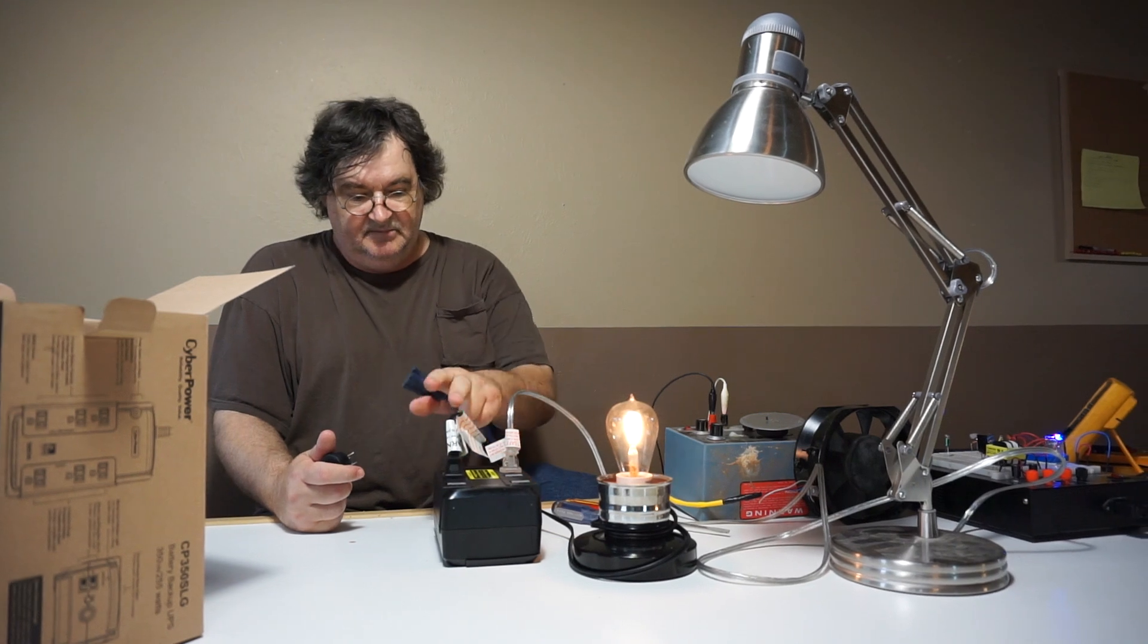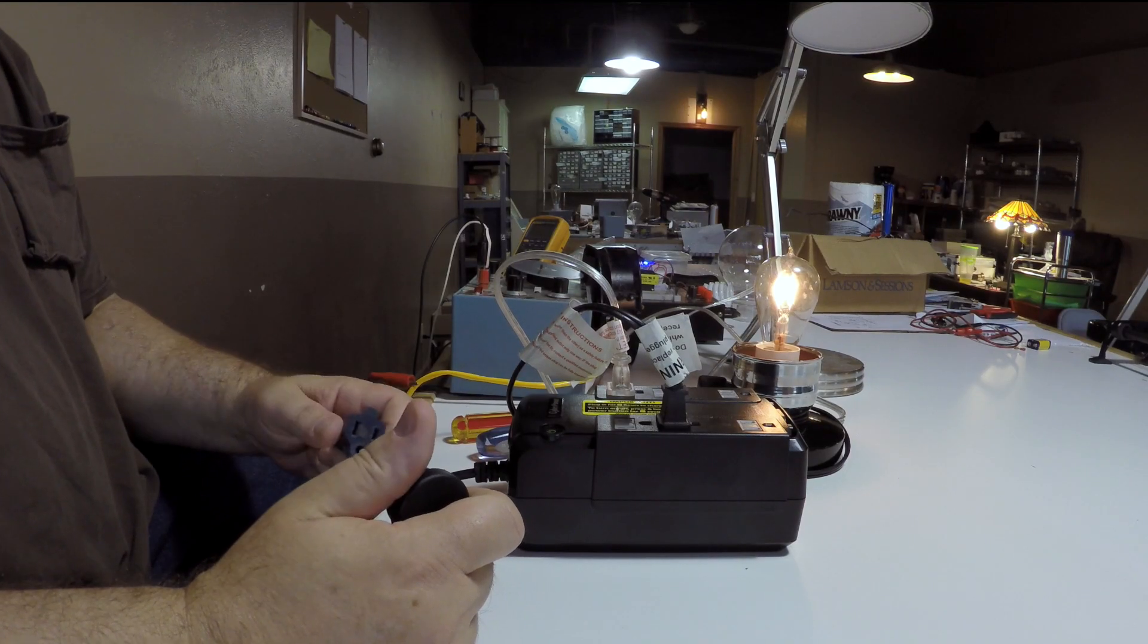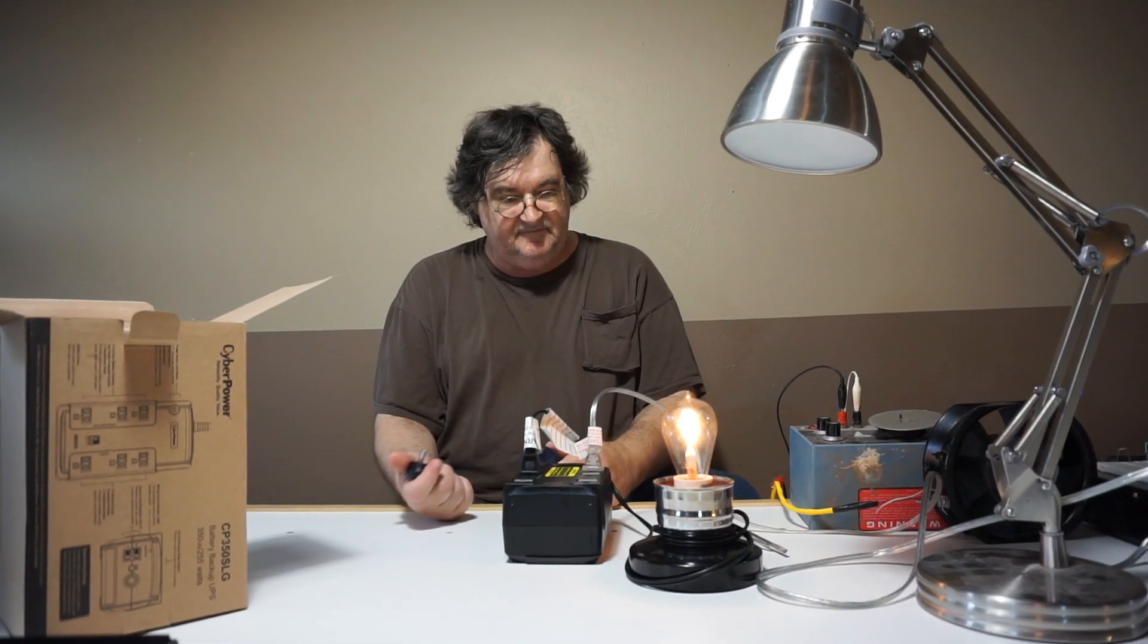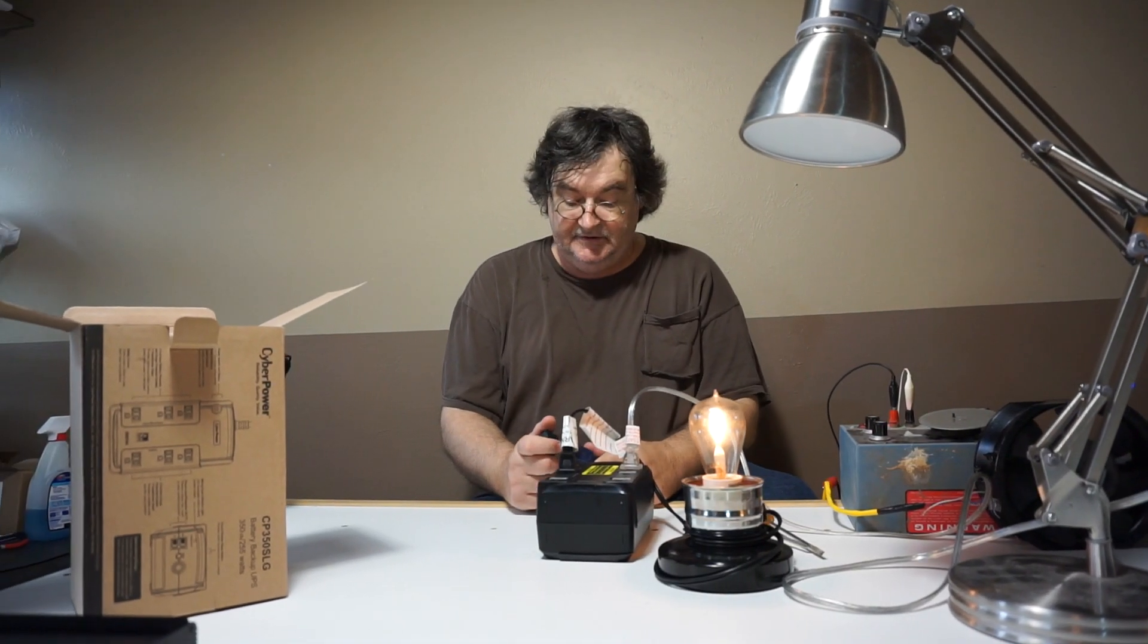So when I unplug this, this lamp turns off because the power has been removed, but this little light continues to run because it's being supplied by the battery inside of the UPS which is converting the 12 volt to 120 volt.